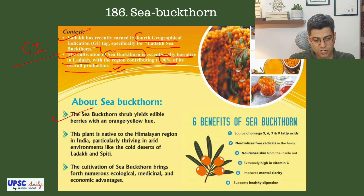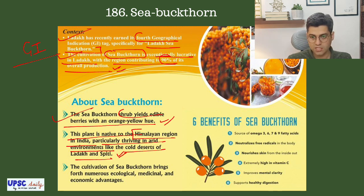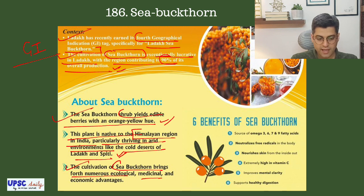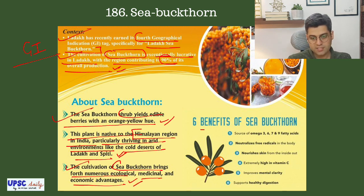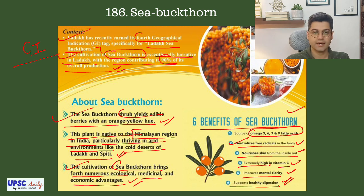The Sea Buckthorn shrub yields edible berries with an orange-yellow hue. This plant is native to the Himalayan region in India, particularly thriving in arid environments like the cold deserts of Ladakh and Spiti. Cultivation brings numerous ecological, medicinal and economic advantages. Benefits include being a source of omega-3, 6, 7 and 9 fatty acids, neutralizing free radicals in the body, nourishing skin from inside out, being extremely high in vitamin C, improving mental clarity and supporting healthy digestion.